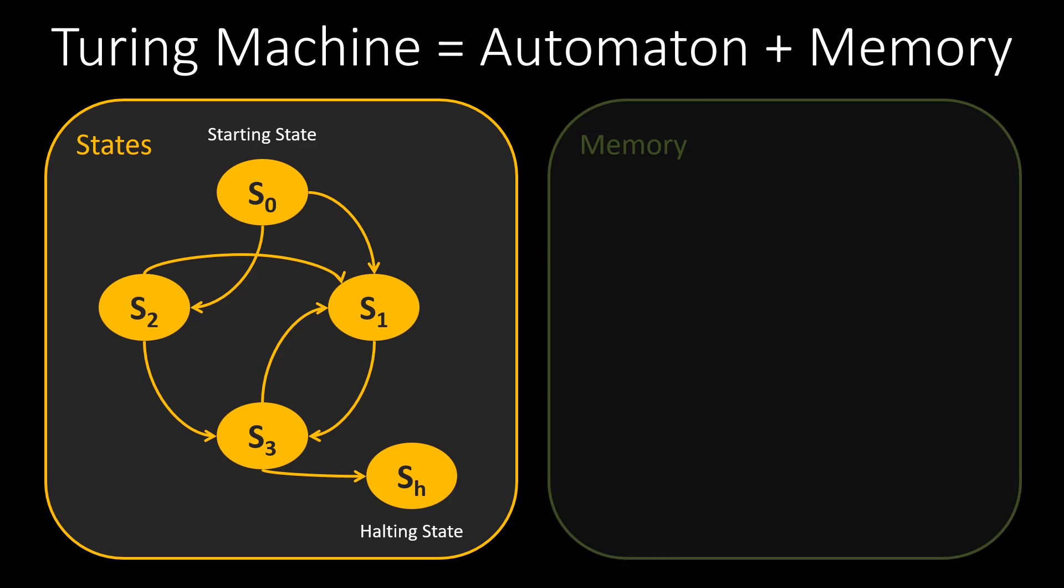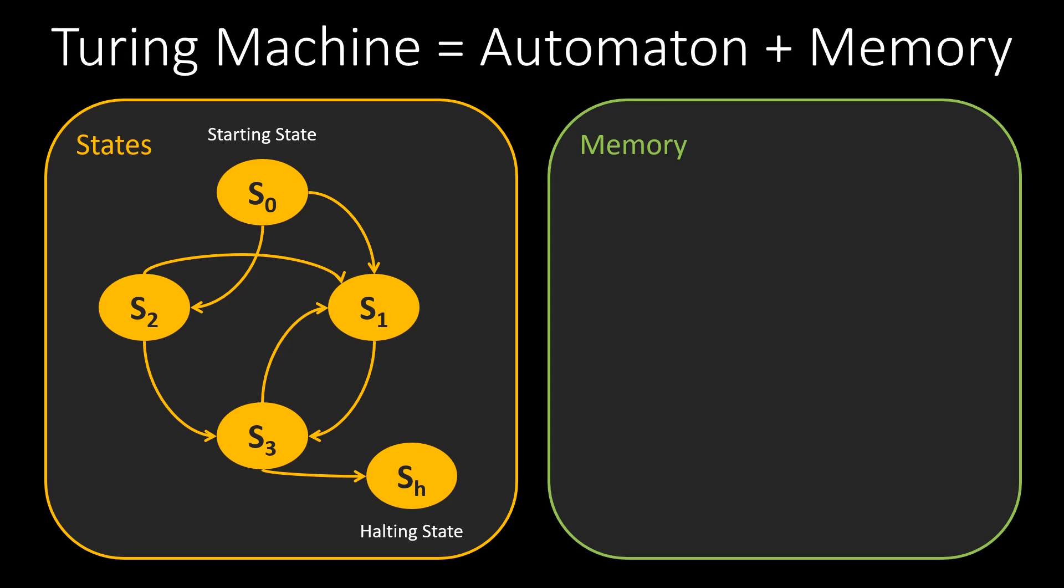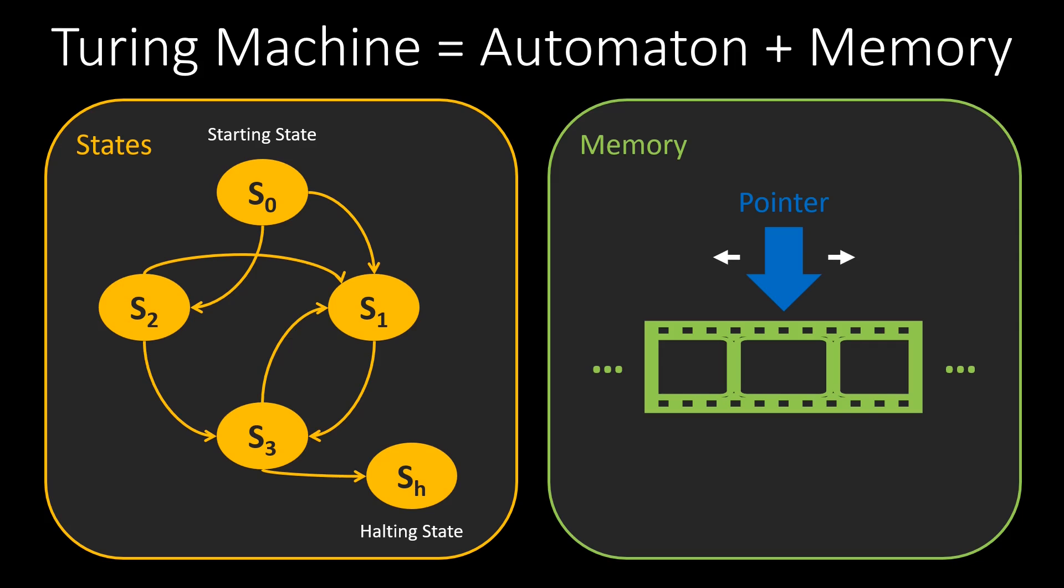We also need some memory to store data. A simple form of memory is a tape, which is for simplicity infinite in both directions. This tape consists of cells. The machine can read data from these cells and write data into them. A pointer marks the position on the tape where we are currently reading data from or writing data into. After executing a calculation step, this pointer can either move one cell left or right, or stay at the current position, depending on the current state.